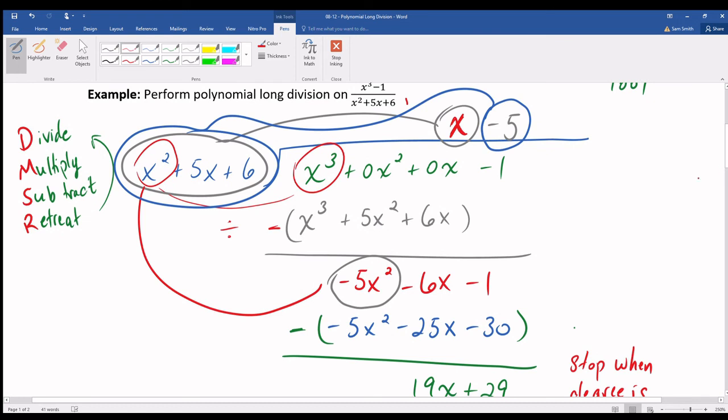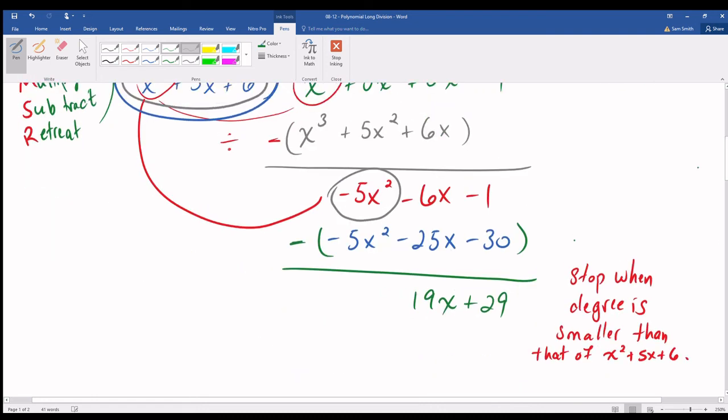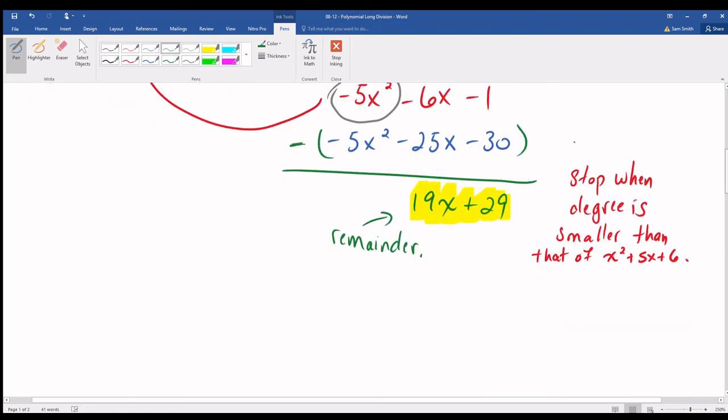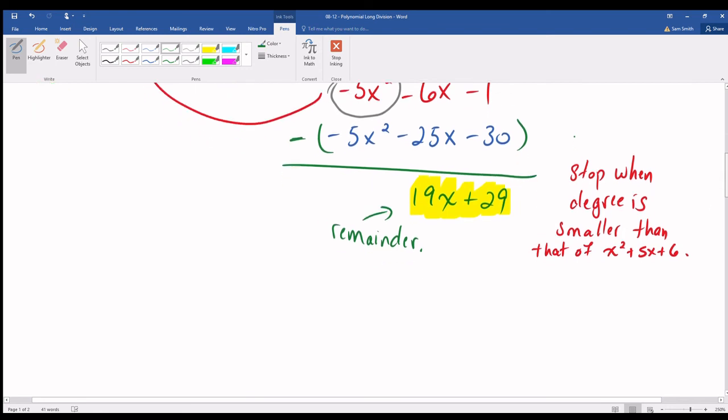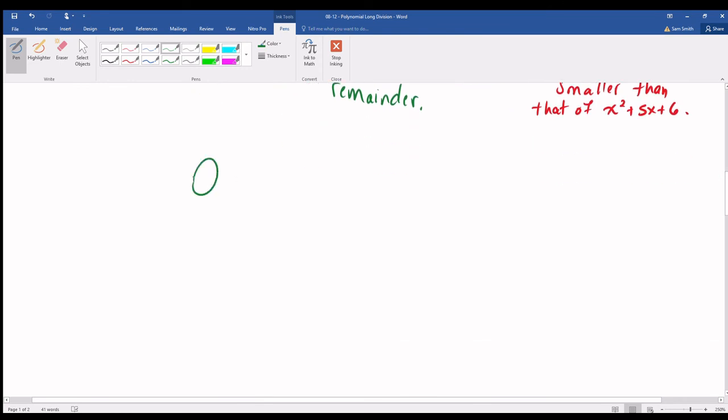And now I am just going to assemble the quotient that I have found and the remainder in such a way that as I assemble the quotient and the remainder, the result is equal to the quantity that I started with. So here is the process. You do quotient plus the remainder, the part that could not be divided evenly, still over the divisor.